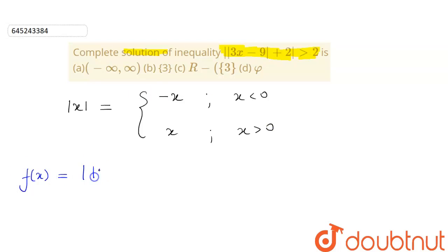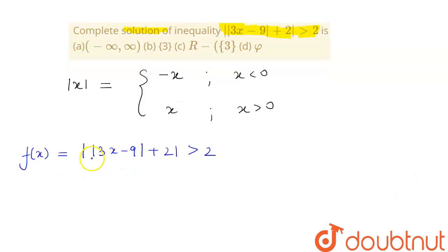Here we have f(x) to be equal to ||3x - 9| + 2| > 2. So if we remove the outer modulus sign, we see that this will open up as |3x - 9| + 2 > 2.